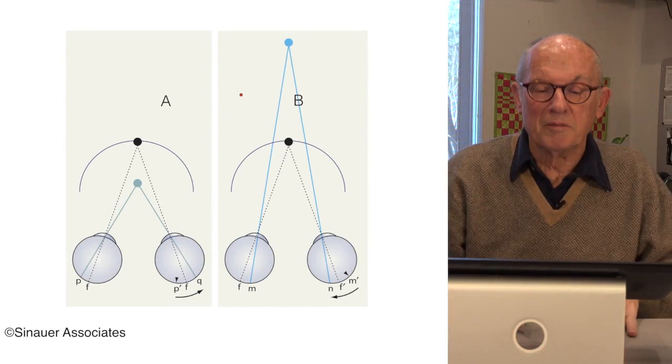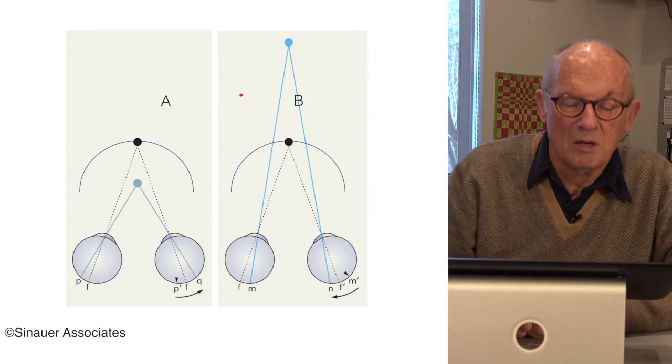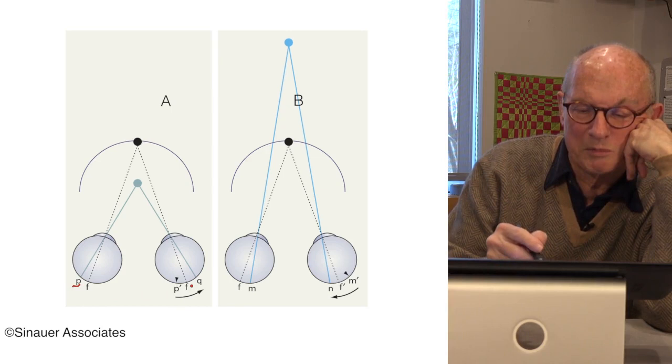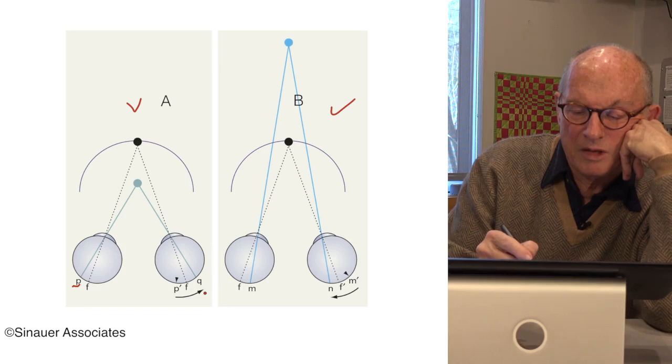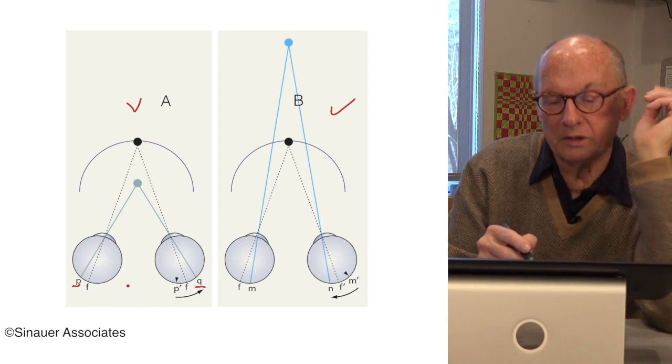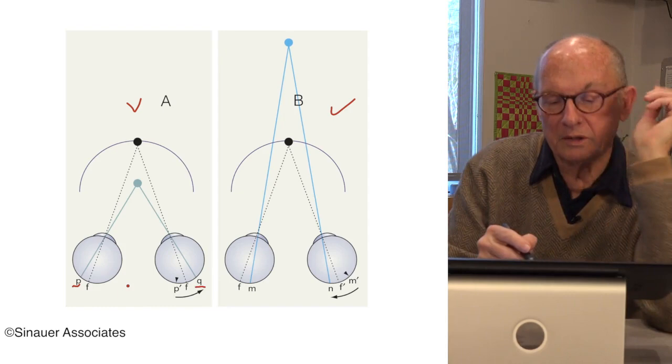What's the message of the random dot stereogram for the correspondence problem? Remember, I said before that in disparity, whether it's cross-disparity or uncross-disparity, your job is to match P and Q in a cross-disparity image or match M and N in a view of this that is uncross-disparity. And the question is, how could you do that? That's image matching. You have to figure out some way that you can take the left eye image and the right eye image and match them.